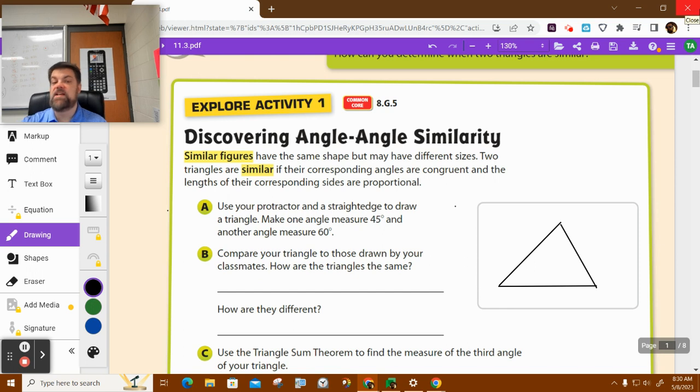So remember when we did dilations, we either made the image bigger or we made it smaller. The angles were always the same but the side lengths were different. And they were proportional.